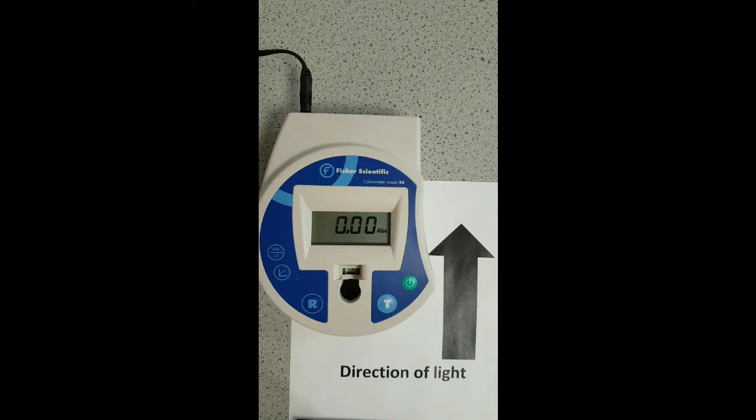We can use our absorbance values to determine the concentration of an unknown sample, but in order to do this we must first produce a calibration curve or plot by analyzing a series of known concentrations.